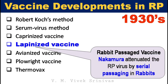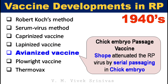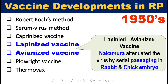In the 1930s, the lapinized vaccine — that is, rabbit passage vaccine — was developed. Nakamura attenuated the virus by serially passaging it in rabbits. In the 1940s, the avianized vaccine — chick embryo passage vaccine — was developed, with Shope attenuating the virus by serially passaging it in chick embryos. In the 1950s, a lapinized-avianized vaccine was developed where the virus was serially passaged in both rabbits and chick embryos.